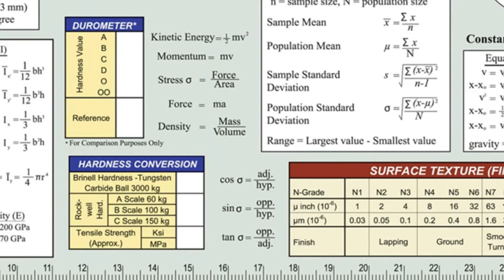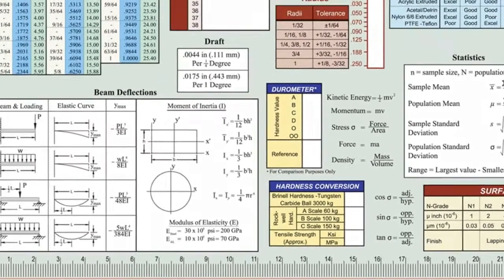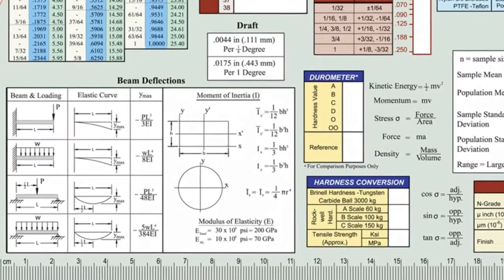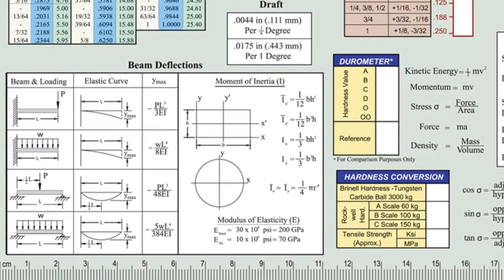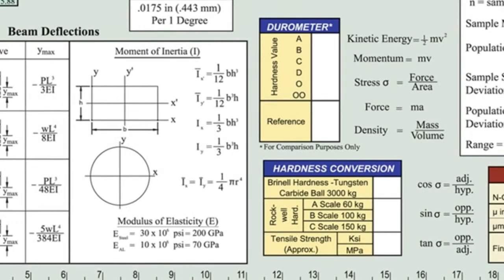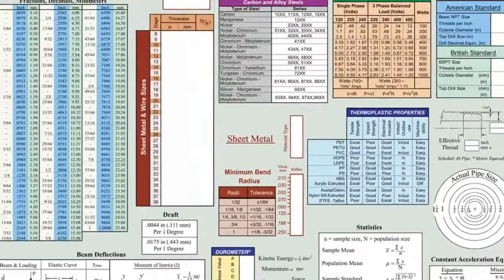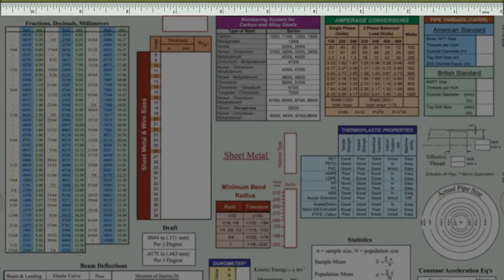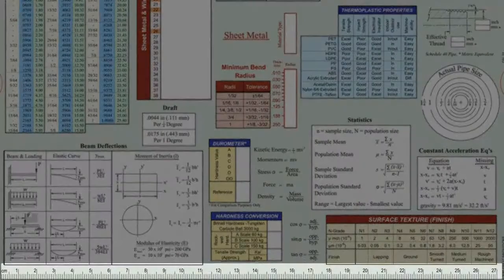The beam deflections table includes beam loading diagrams and formulas for maximum deflection and moment of inertia. To the right, a table of relative comparisons of hardness values across the durometer scales. Below that, a hardness conversion table that allows you to quickly cross-reference Brinell hardness to the Rockwell A, B, and C scales to tensile strength. Rulers for inches and millimeters complete the back of the slide chart on the top and bottom, respectively.